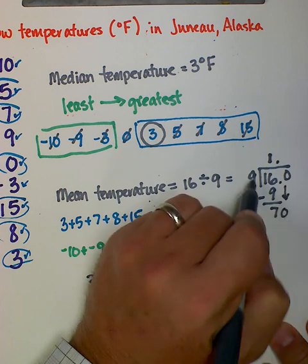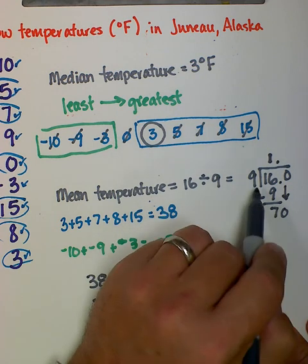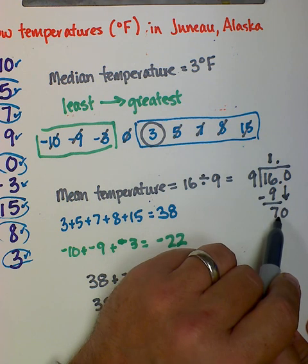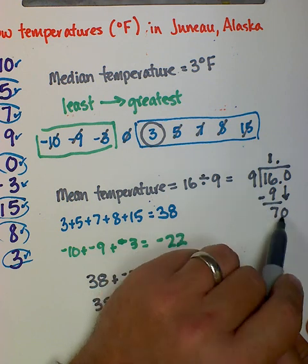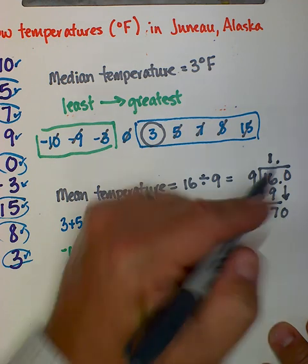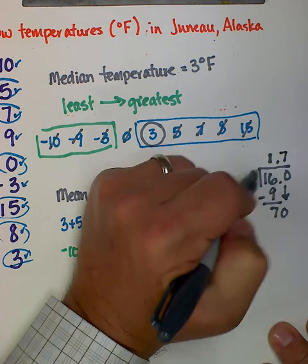Bring down my zero. 9 goes into 70... well, 9 times 7 is 63, 9 times 8 is 72, so I know it's not 9 times 8. So it's 9 times 7 is 63.